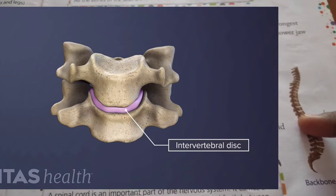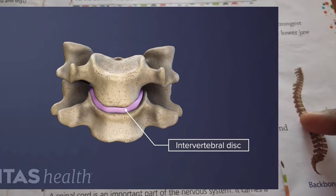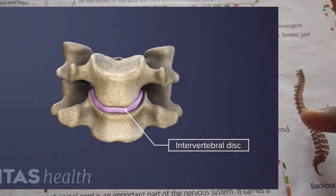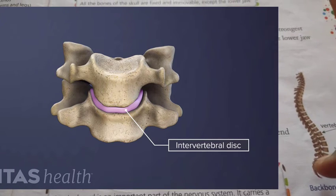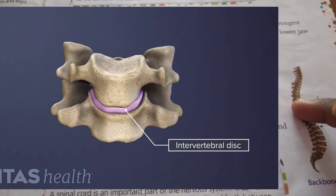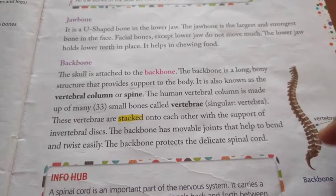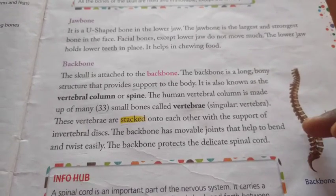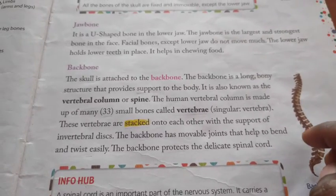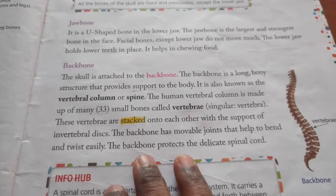The intervertebral disc connects the vertebrae. The backbone has movable joints that help to bend and twist easily. The backbone protects the delicate spinal cord.